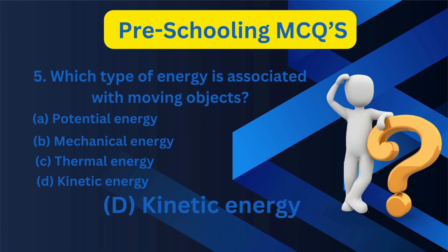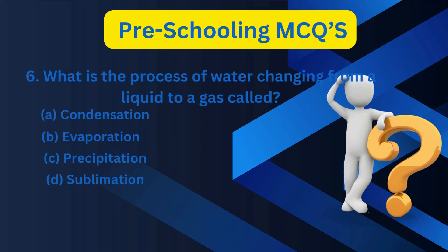6. What is the process of water changing from a liquid to a gas called? A. Condensation, B. Evaporation, C. Precipitation, D. Sublimation.